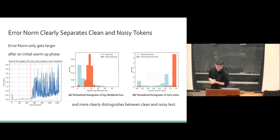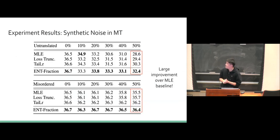There are some very nice properties of the error norm. At the left, we can see that the error norm only gets larger after initial warm phase. This is when we pre-train the GPT-2 large model on Wikitext 103, and we plotted out the largest 10% error norm of data in each mini-batch. At the beginning, there's a sort of warm-up phase, and after the warm-up phase, the model learns to assign very high error norms to the noisy tokens. At the right, we have a comparison between using the loss to indicate token quality and using the error norm. We manually annotated 300 examples from the GigaWord summarization dataset. The loss provides a clear distinction between clean and noisy examples, but the error norm provides a cleaner distinction.